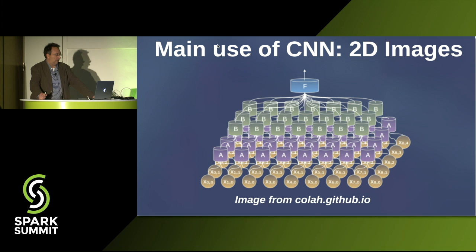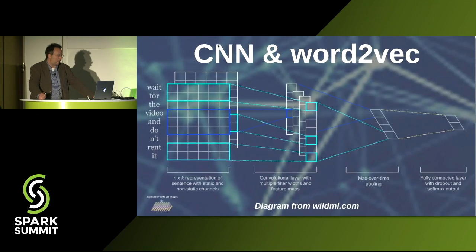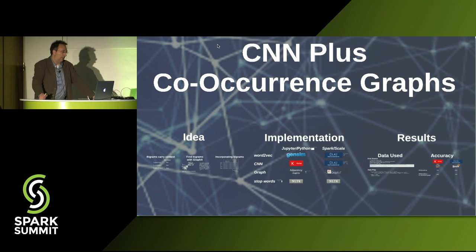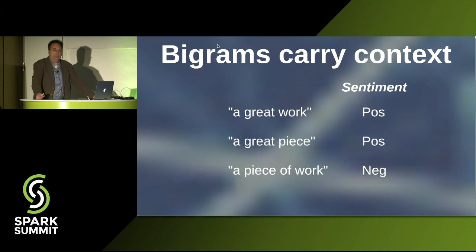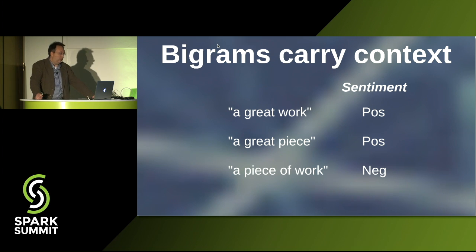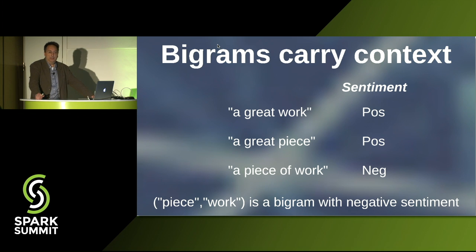Most CNNs are used for image analysis — you take a 2D array of pixels and the final output is something like: is this a dog or a cat? Now I'm going to talk about CNN, Word2Vec, and co-occurrence graphs. The motivating idea is that bigrams carry context. The words in Word2Vec have no concept of the context around them. For example, work and piece are generally good words to see, but piece of work is a bad thing. The idea is to capture all the popular bigrams and add those as features to our model.